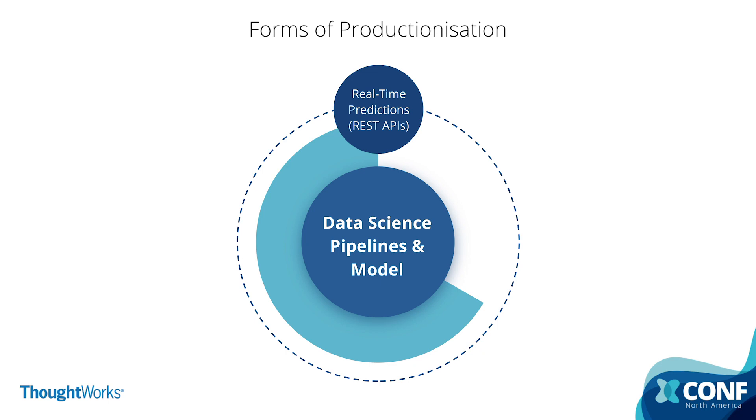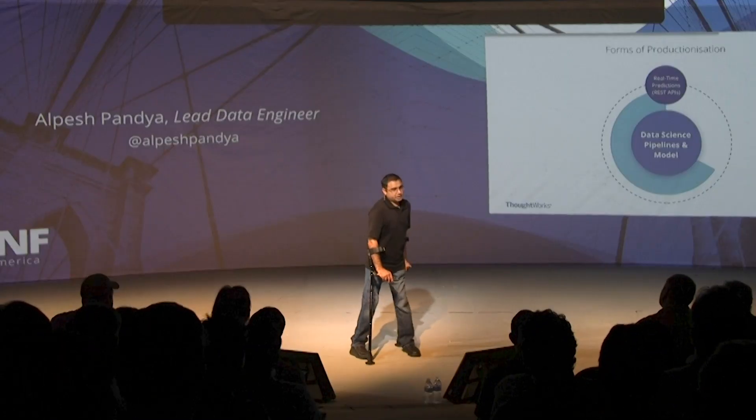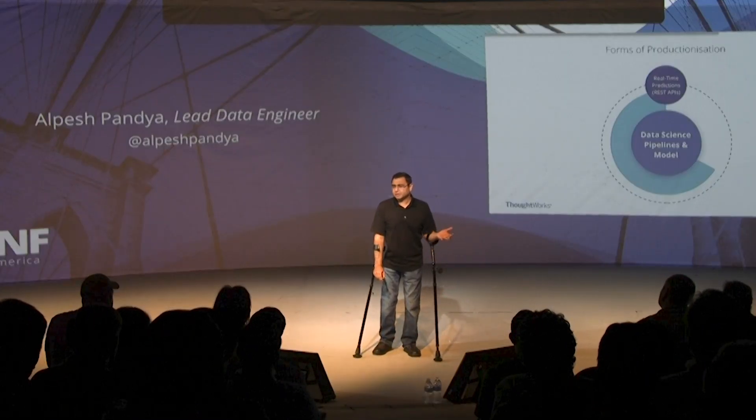We see three different forms of model being deployed to production. One is the real-time predictions model, where we deploy the model as an API or web service - it can be a SOAP service or REST service. These are usually designed to be used by web applications and mobile applications for real-time predictions.